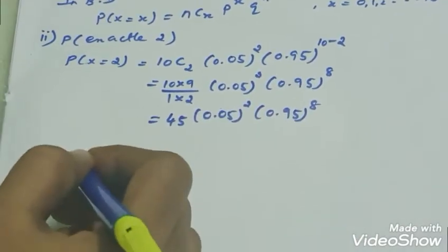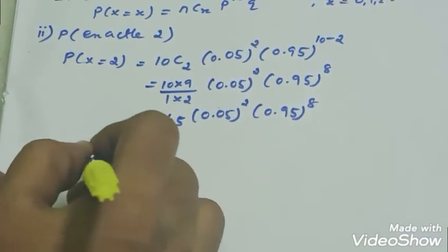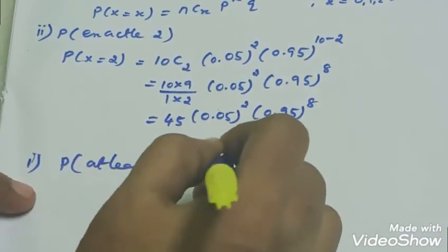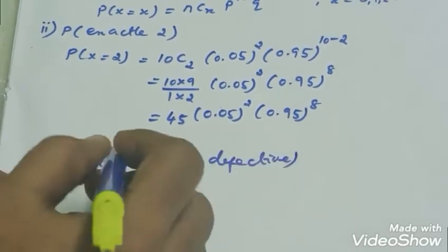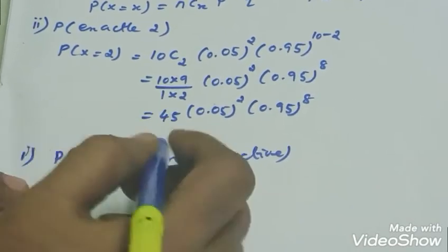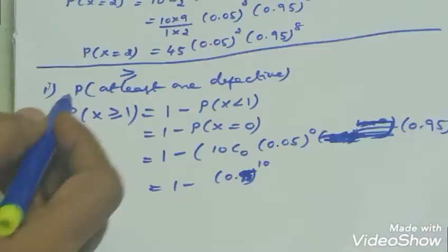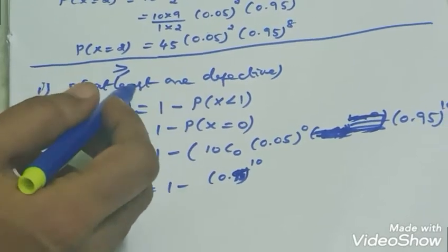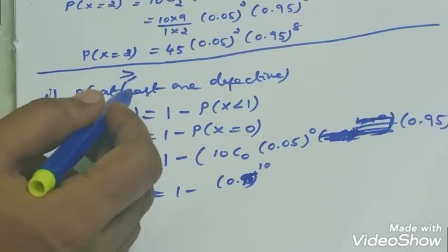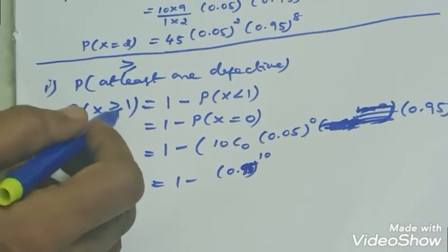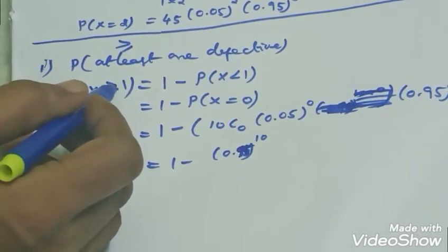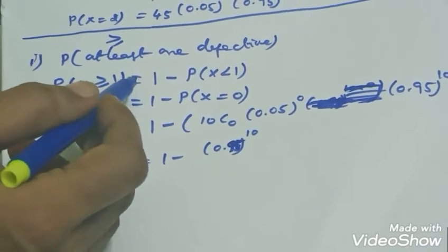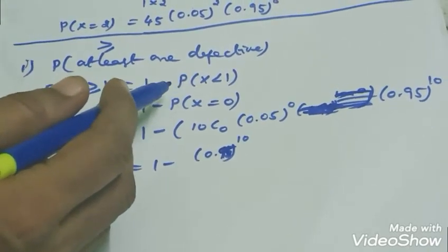Now the first subdivision: probability of at least 1 defective. 'At least' means greater than or equal to 1. So P(X ≥ 1) = P(X=1) + P(X=2) + P(X=3) + ... + P(X=10). This equals 1 minus P(X less than 1), which is 1 minus P(X=0).